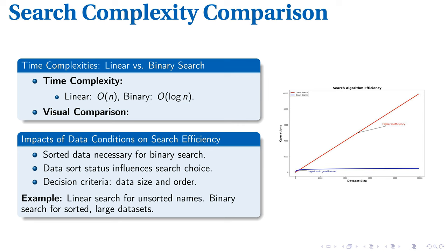As an illustration, consider locating a specific name in an unsorted list. Linear search would be ideal. However, binary search is your ally when navigating through a larger, sorted dataset. This decision usually hinges on data size and its order.